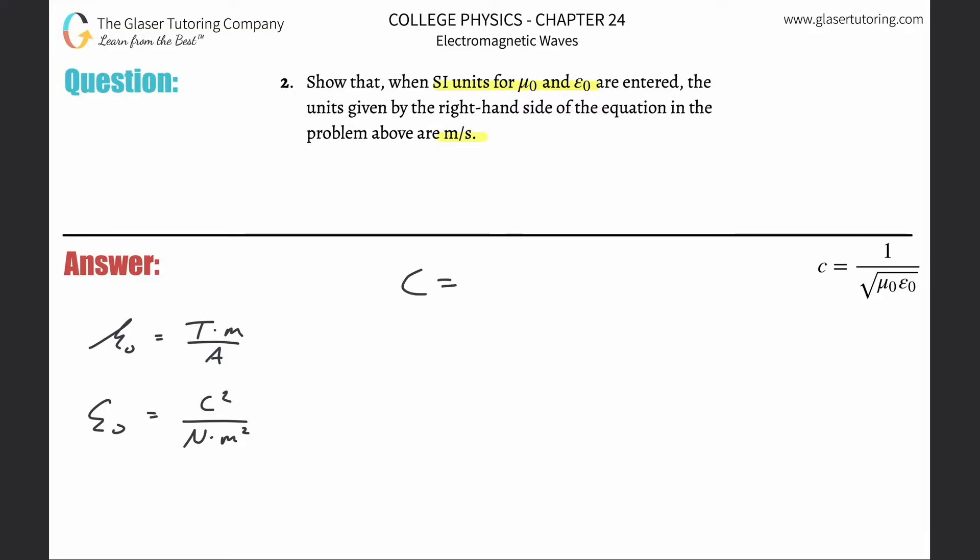This simply equals c = 1 over the square root. Now I'm not going to plug in the values, instead I'm going to plug in their units because this is a unit problem. So this is going to be tesla·meter per amp, multiplied by coulomb squared per newton·meter squared.